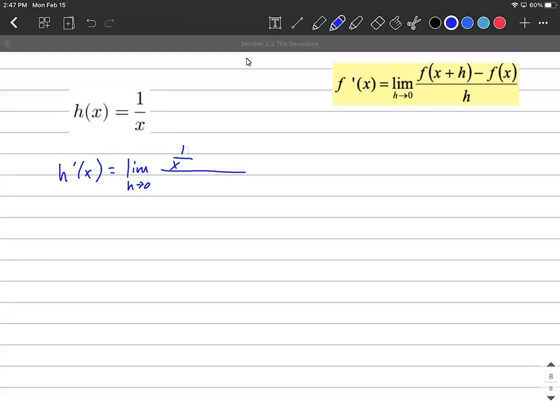So it'll be 1 over x plus h, and then subtract away the original function. And that's all over h. To simplify this down and reduce it, and to actually take this derivative, it's mostly a matter of a bunch of algebra from here on out.